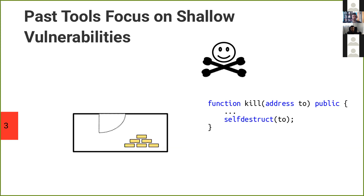In this analogy, the pirate is going to steal your gold, and it's quite easy for them to do so because you've left an open door. On the right-hand side, we see where this analogy is inspired from — a very simple public function called 'kill' that everybody can call, which contains a self-destruct. The self-destruct erases the code associated with the smart contract address and also sends the remaining funds to the address passed as parameter.